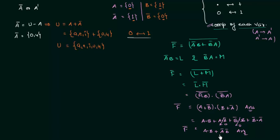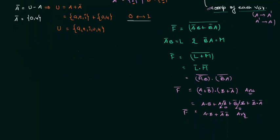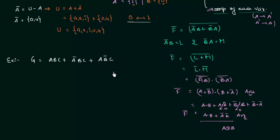If you have any idea about logic gates, this is A XNOR B — taking the complement of A XOR B gives A XNOR B. We will discuss this further in a logic gates presentation. Now for the homework problem: function g equals A·B·C + A-complement·B·C + A·B-complement·C. Find g-complement using the rules we covered. Post your answer in the comment section. This is all for this presentation — see you in the next one.